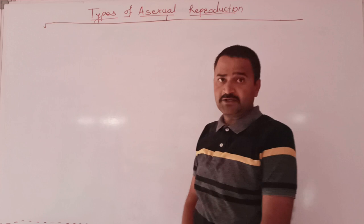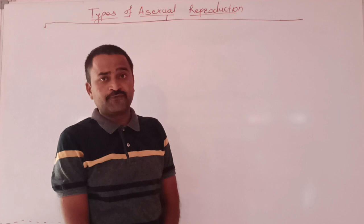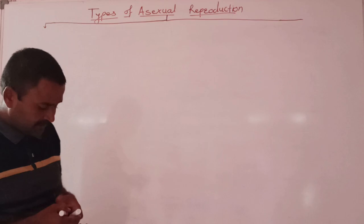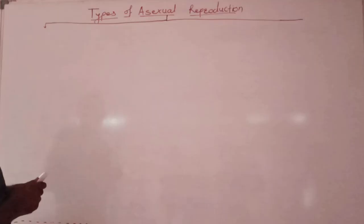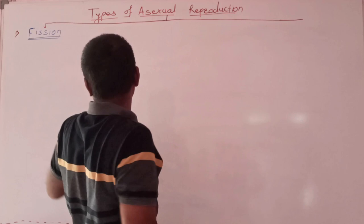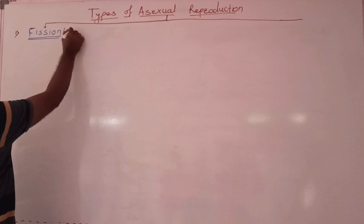Asexual reproduction is very common in unicellular organisms and is also found in multicellular organisms like plants, animals, as well as fungi. The various methods of asexual reproduction are, first of all, fission. This method is called fission.